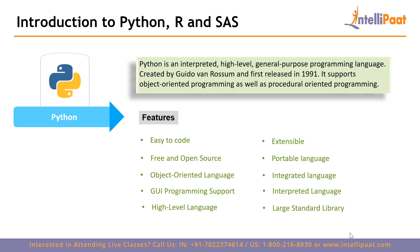Python's unique features include: it is easy to code — a very simple language anyone can learn. It is free and open source. It supports object-oriented programming, encapsulating code within objects. It supports GUI applications that can be ported to many system calls, libraries, and window systems such as Windows MFC, Macintosh, and the X Windows systems of Unix. It is also a high-level, extensible language — you can add low-level modules to the Python interpreter to make tools more efficient.